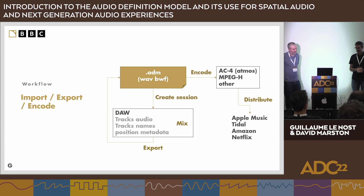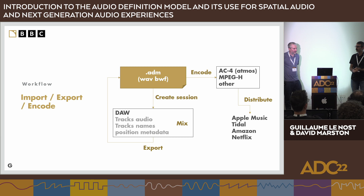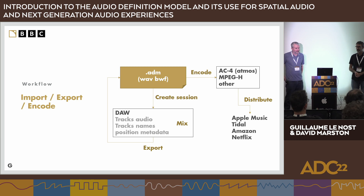Once the mix or media is ready, the same ADM file can be used for encoding or mastering for distribution. It could be encoded into different formats such as MPEG-H or AC-4, which is the codec used by the Dolby Atmos suite. These formats can then be uploaded to streaming platforms — many today support spatial audio formats, including Apple Music, Tidal, Amazon, and Netflix for movies.